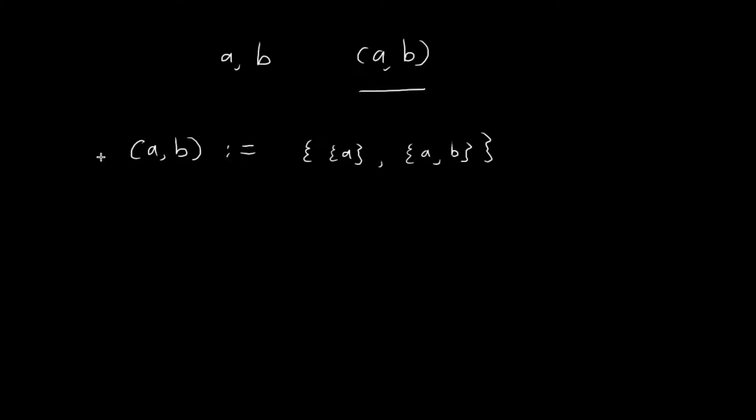And using the definition of set equality, as well as this definition, we can actually prove that (A,B) is equal to (C,D) if and only if A is equal to C and B is equal to D, which is exactly what we want for ordered pairs.